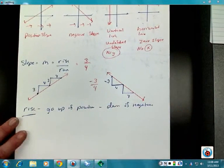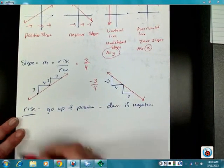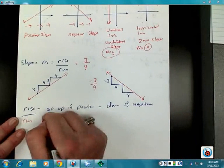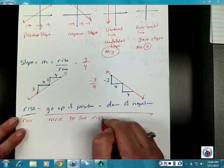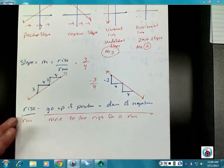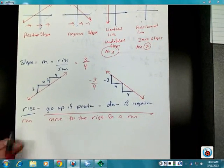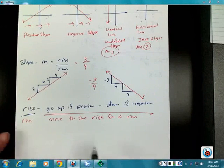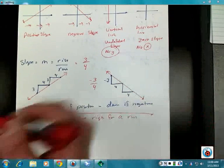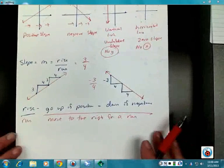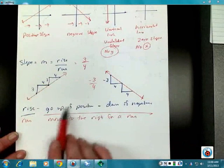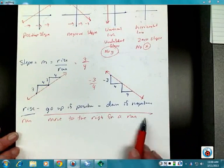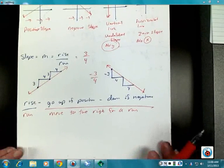The run is always to the right — you're going to move to the right for a run. So always move to the right when you do your rises and runs. Sometimes in algebra they told you that you could go either way, but you can get confused. So just always do your rise going up or down based on whether it's positive or negative, and do your run to the right, and you'll get your slopes to come out correctly.